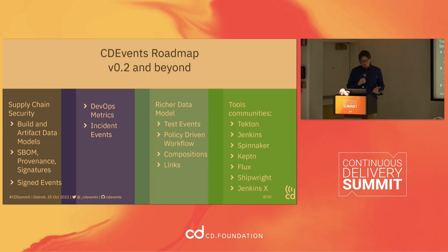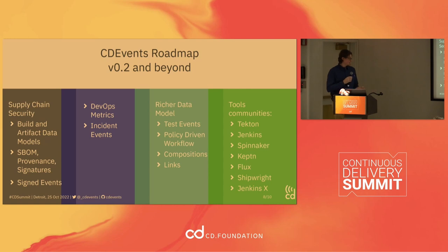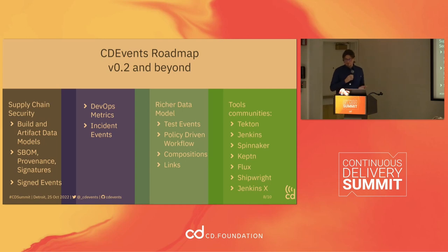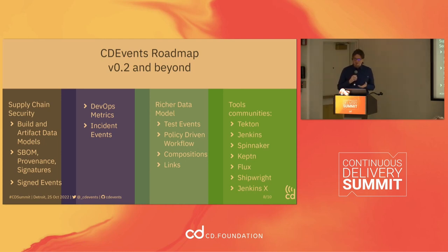In terms of features for CD Events, we are looking at the supply chain security area. We want to extend the built-in artifact data models to include information like SBOM, provenance, and signature. Also specifically important for event-driven workflows: if you want to rely on an event to start a certain part of your workflow, it's important that you can trust that event. So we'll be investigating whether we can sign events and ensure that the consumer of an event knows it has not been tampered with.